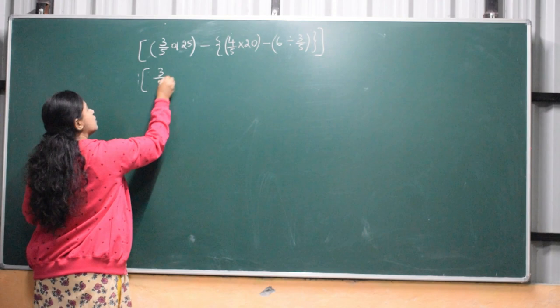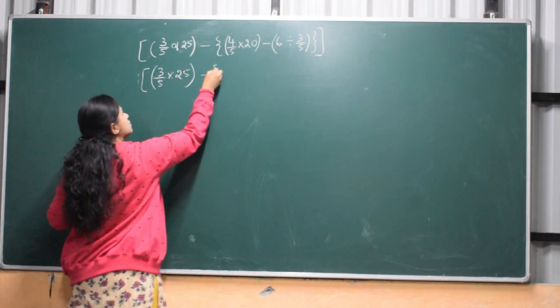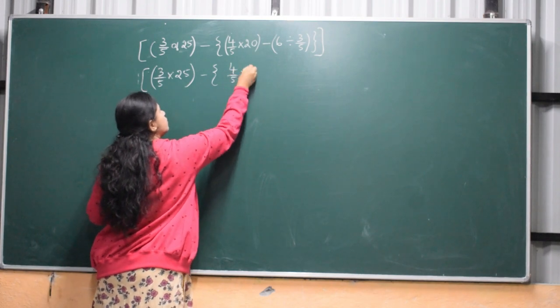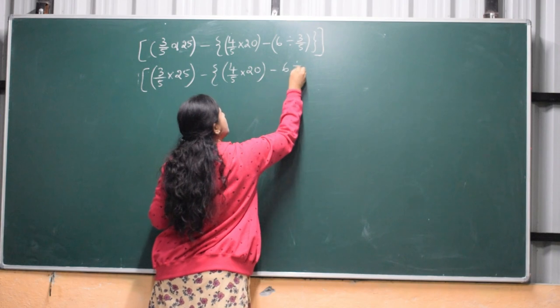The problem is 3 by 5 into 25 minus 4 by 5 into 20 minus 6, divided by 3 by 5.